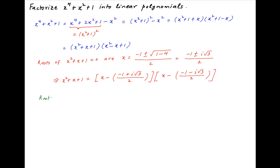Similarly, the roots of the quadratic equation x squared minus x plus 1 equals 0 are: 1 plus or minus the square root of 1 minus 4, divided by 2, which is equal to 1 plus or minus i times root 3 upon 2.